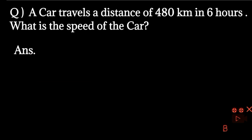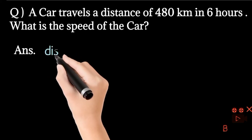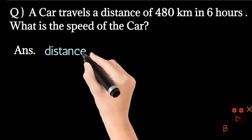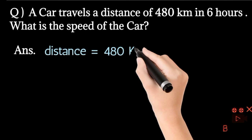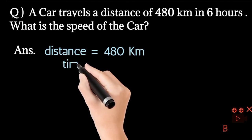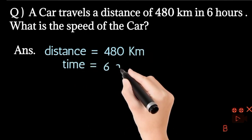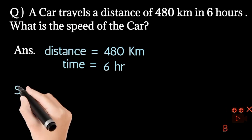How do we solve this? First of all, let us see what the distance is. Distance equals to 480 km. Time is 6 hours, so time equals to 6 hours. Then speed equals to what?